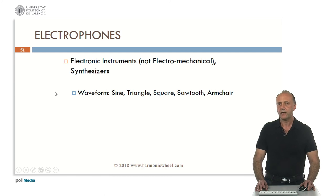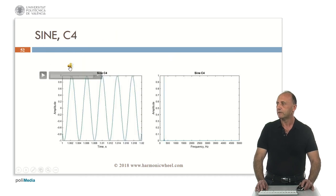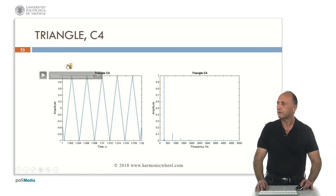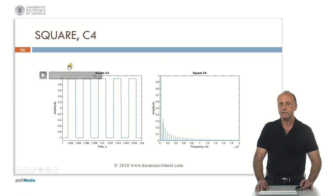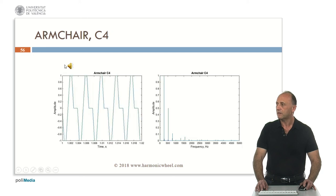Now let's analyze the electrophones. Here we include only pure electronic instruments and not electromechanical — that is, synthesizers. We will analyze first the simple waveforms: sine, triangle, square and sawtooth. I also included a new one developed by me which I call 'armchair' because of its waveform shape. The sine C4 is a pure harmonic. The triangle and square only have odd harmonics. This is the sawtooth C4, and this is the armchair waveform.